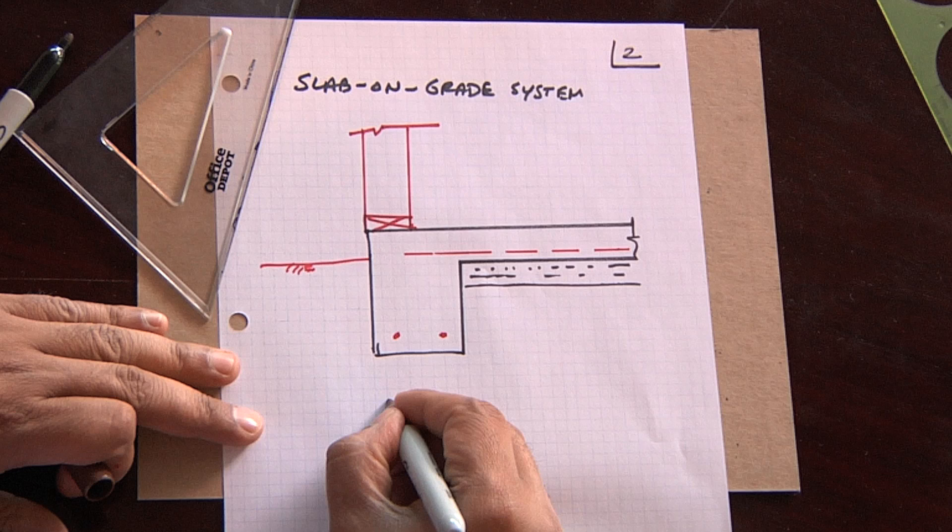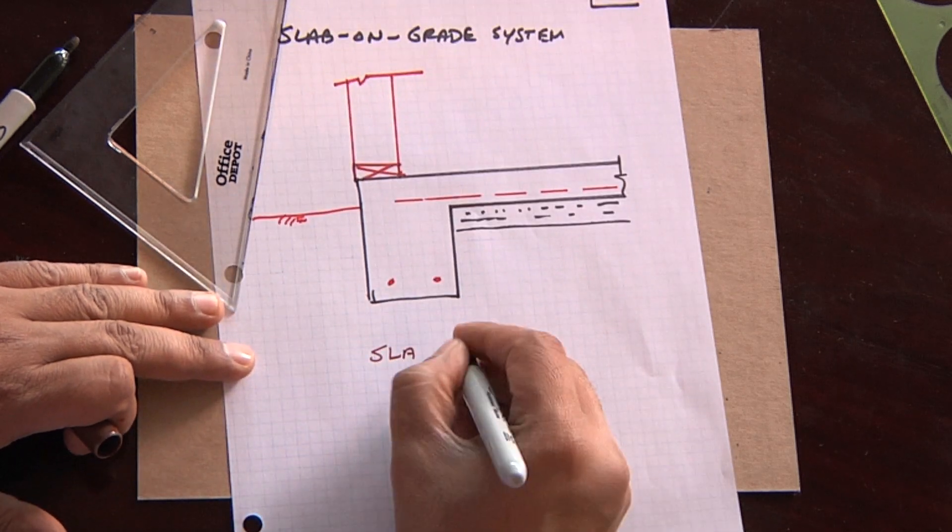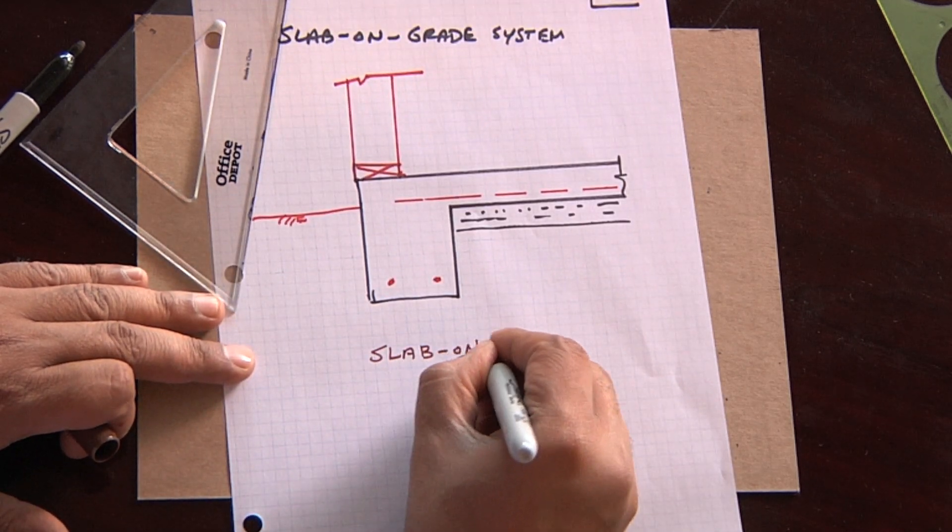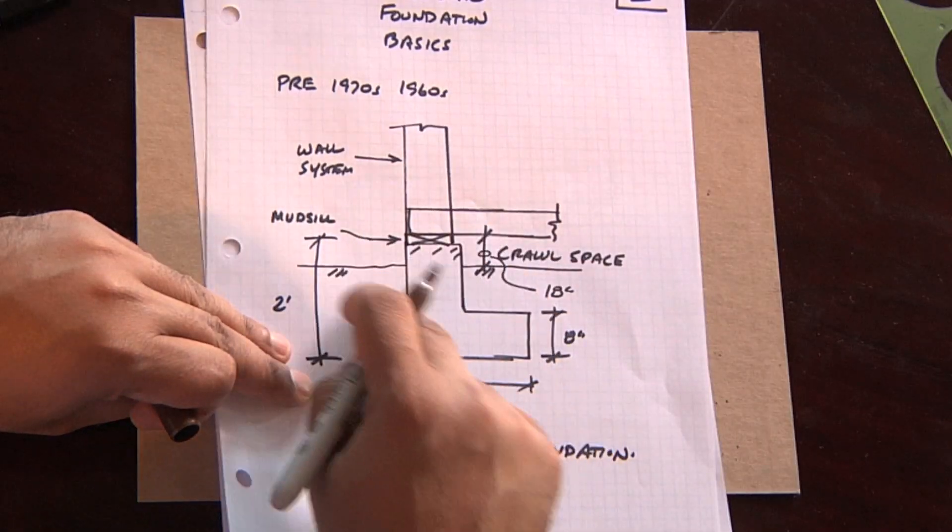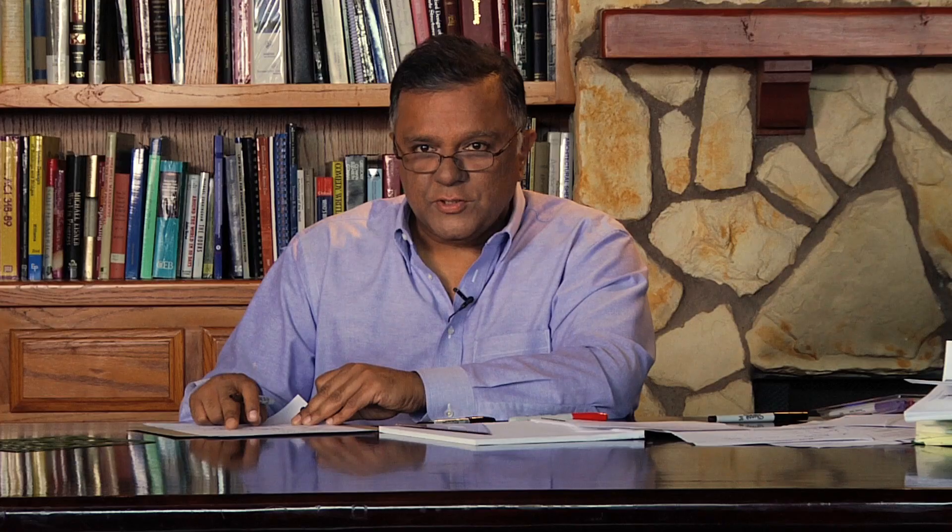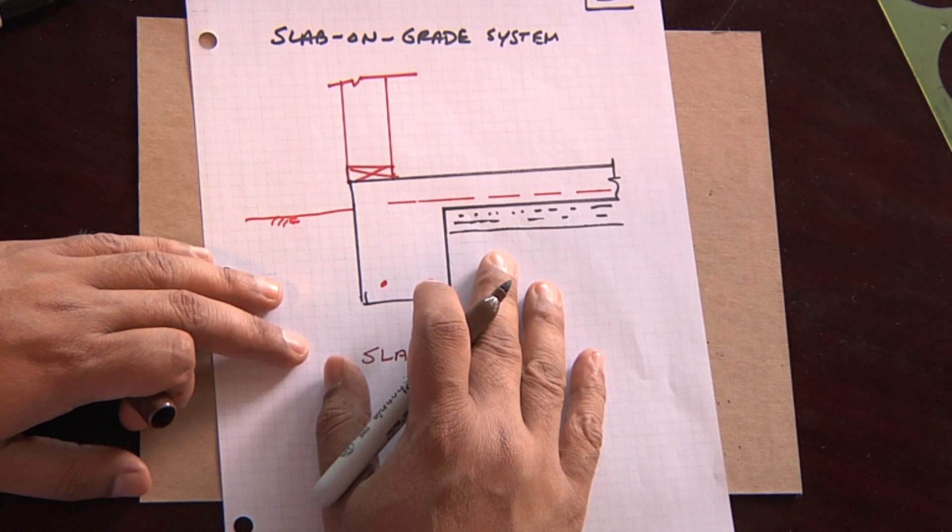And then you have your framing elements for your wall and your dirt line. And so this is a slab on grade foundation. And this is pretty much the way the buildings are built today. Probably 95, maybe 99% of them. I haven't seen any ones being built with a raised floor foundation. Now, why is that such an important thing to know?